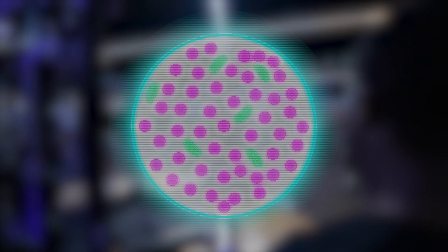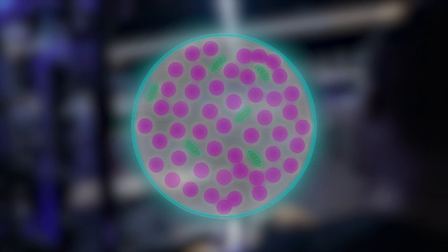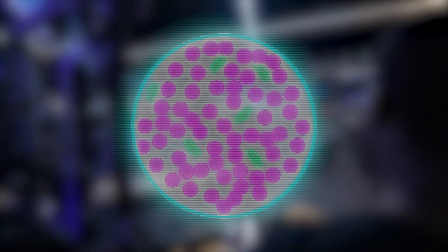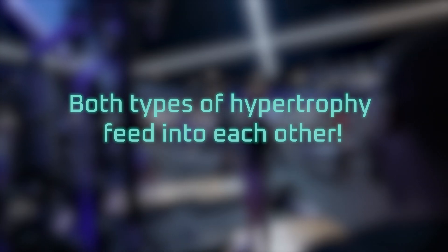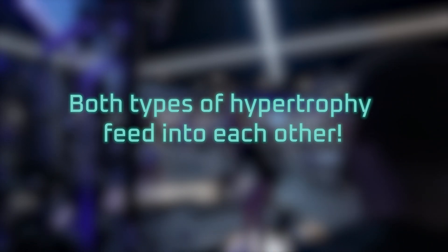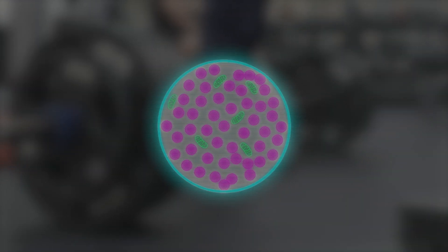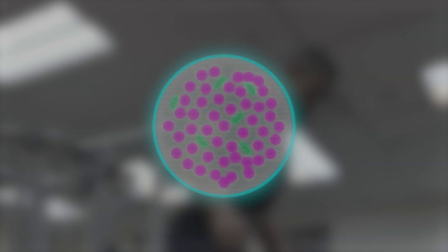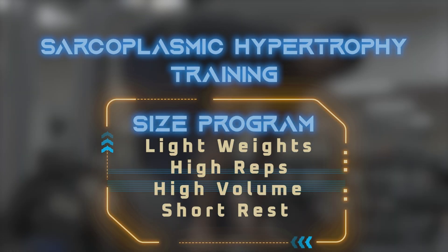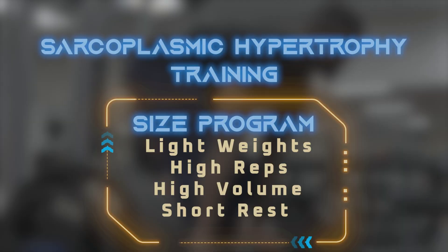One type feeds into the other. When you have more myofibrils, you need more space to create them — and that space is determined by the sarcoplasm. Sarcoplasmic hypertrophy is actually necessary for more myofibrillar hypertrophy, because there's only so much room. A bigger muscle has more strength potential. So if you do no high-rep, low-weight training, you're actually missing out on some strength gains.